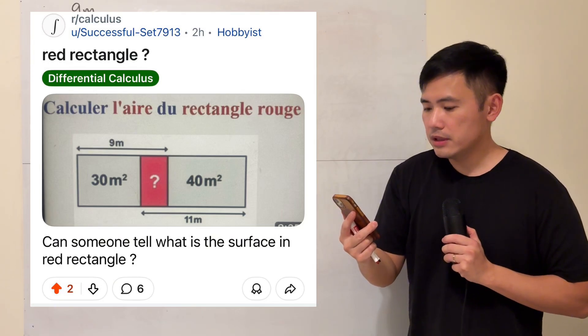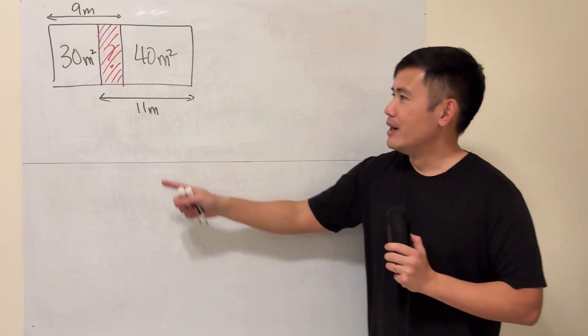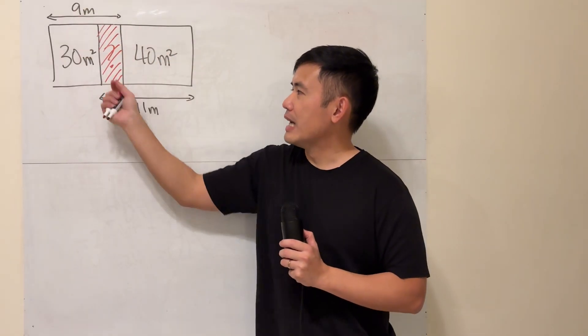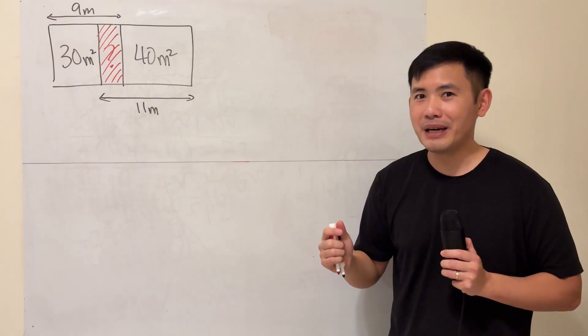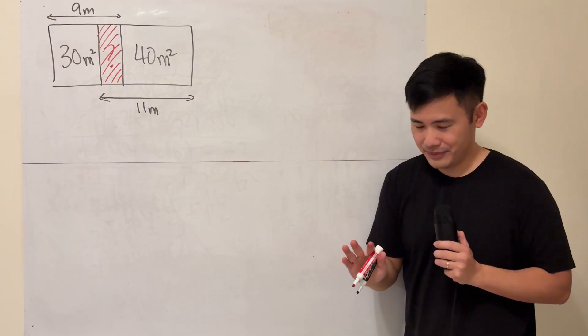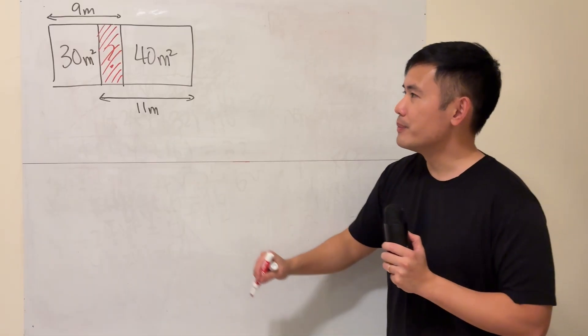Can someone tell what is the surface area of the red rectangle? Okay, here we go. First off, this is 11, this is 9, but you can't just do 11 minus 9 and say that's 2. No, it's not like that. It's an unknown; we don't know what it is yet, so we're going to do some variable business.